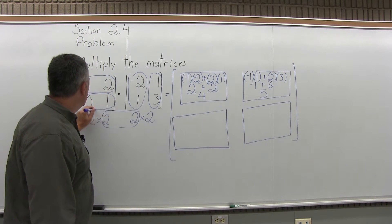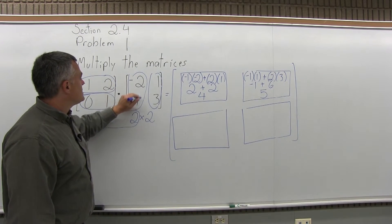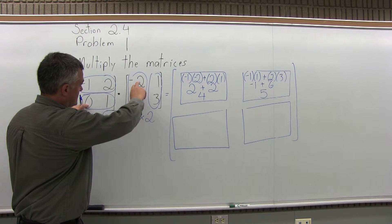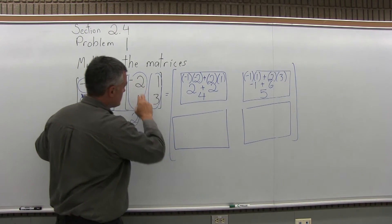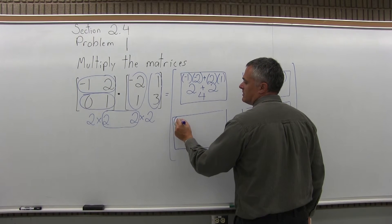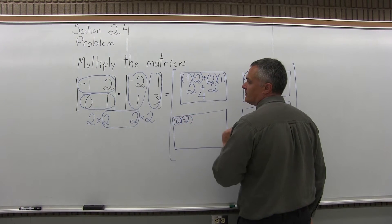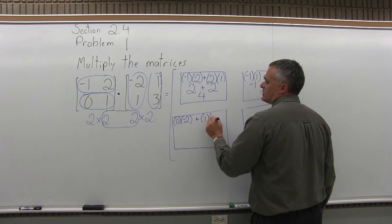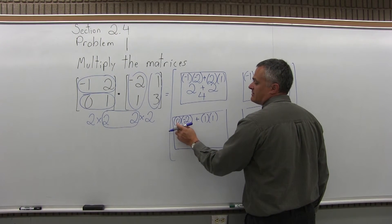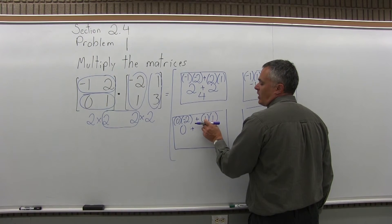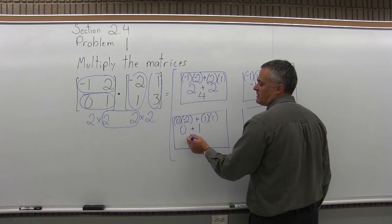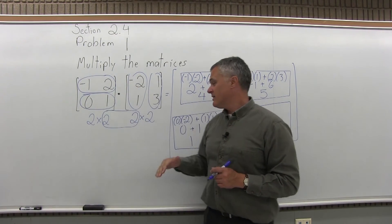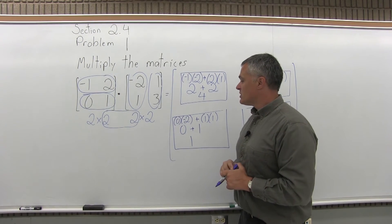Now I'm going to multiply the bottom row of the first matrix times the first column of the second matrix: 0, 1 from the first matrix times negative 2, positive 1 of the second matrix. First times first is 0 times negative 2, and second times second is 1 times 1. 0 times negative 2 is 0, and 1 times 1 is 1. 0 plus 1 gives 1. That answer goes in the bottom row, first column of the solution.